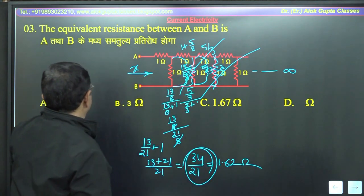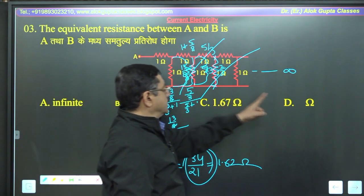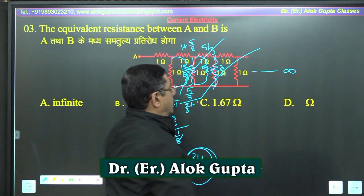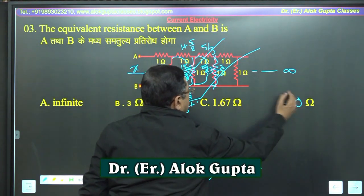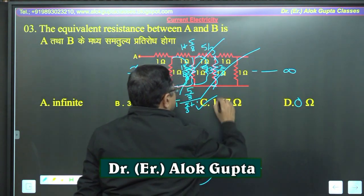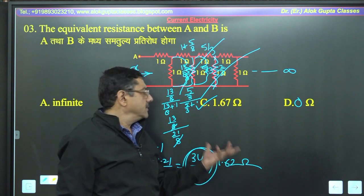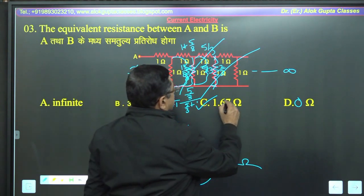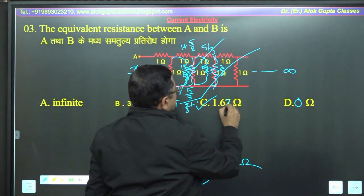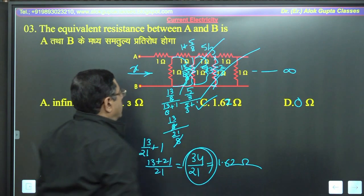Check करो: infinity → 3 ohm, approximately 1.67, 0 ohm। So correct answer is C. वैसे भी exact answer मैंने निकाला — यह 1.62 ohm ही आ रहा है। Alright।